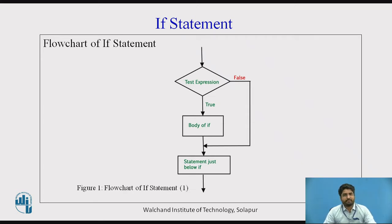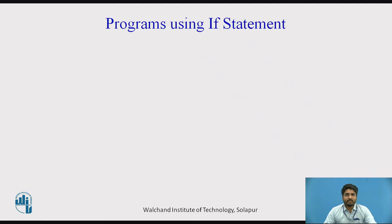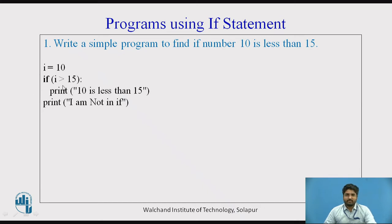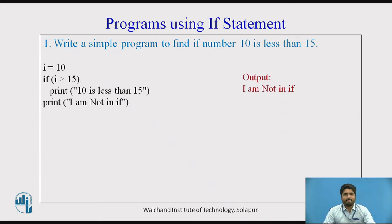Figure 1 shows the flowchart of the if statement. A simple program: write a program to find if number 10 is less than 50. Here i equals 10. If i is greater than 15, print '10 is less than 15'. Since 10 is not greater than 15, the condition is false, it goes directly outside and prints 'I am not in if'. So the output would be 'I am not in if'.